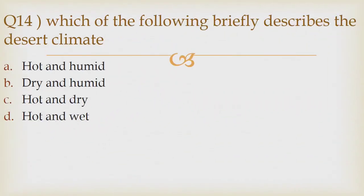Question 14: Which of the following briefly describes the desert climate? Option A hot and humid, option B dry and humid, option C hot and dry, option D hot and wet. The correct answer is option C hot and dry.